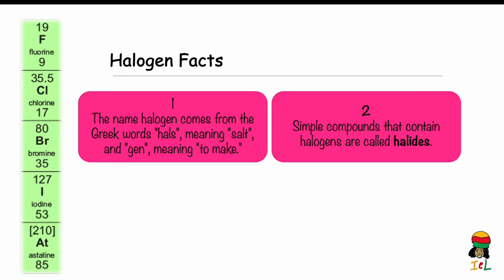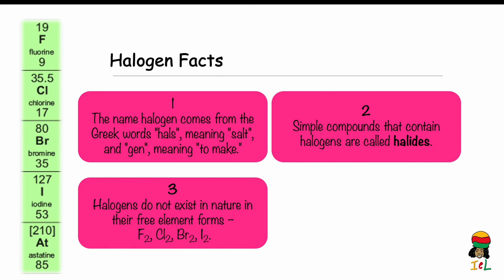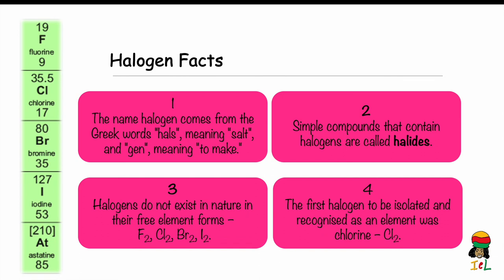Fact 2: Simple compounds that contain halogens are called halides. Fact 3: Halogens do not exist in nature in their free element forms — they exist in the diatomic form: fluorine as F2, chlorine as Cl2, bromine as Br2, and iodine as I2. Fact 4: The first halogen to be isolated and recognized as an element was chlorine, Cl2, which is a pale green poisonous gas.